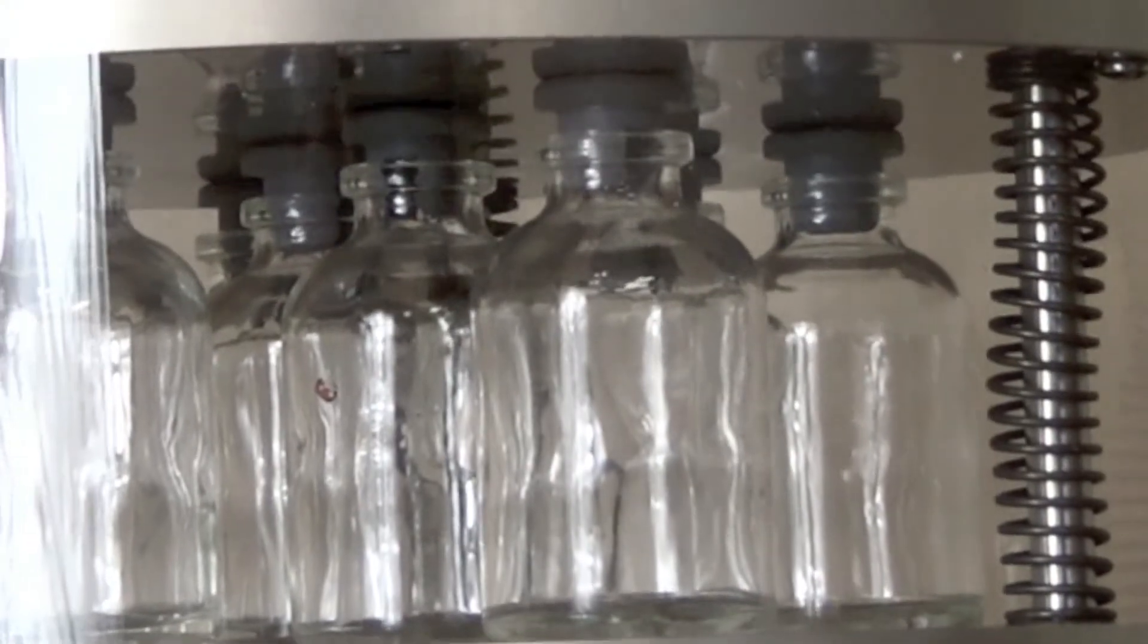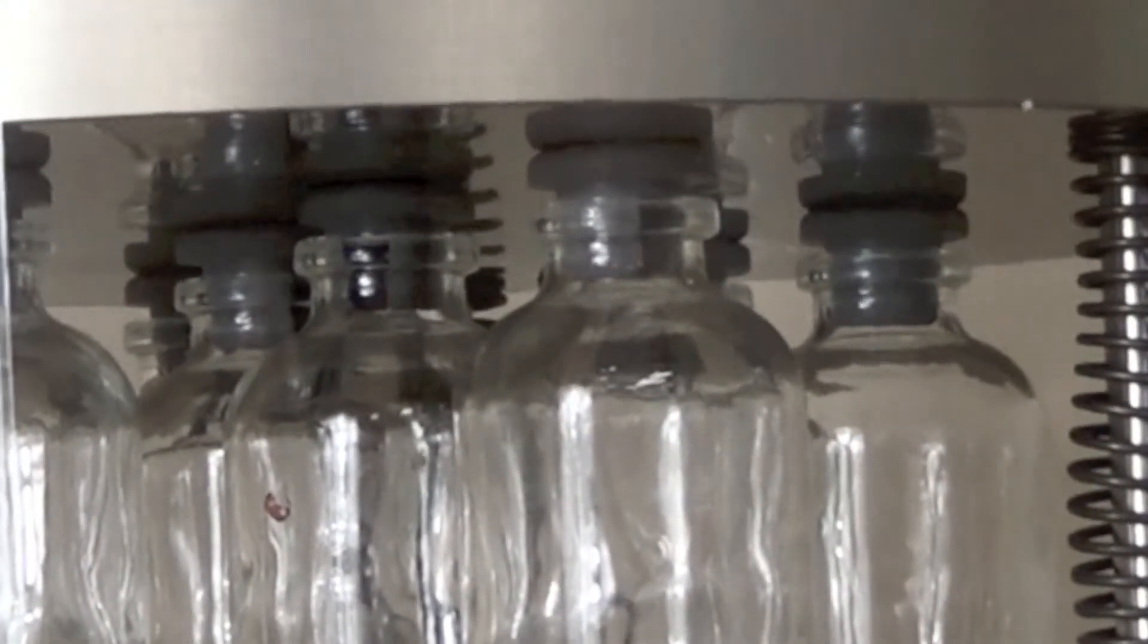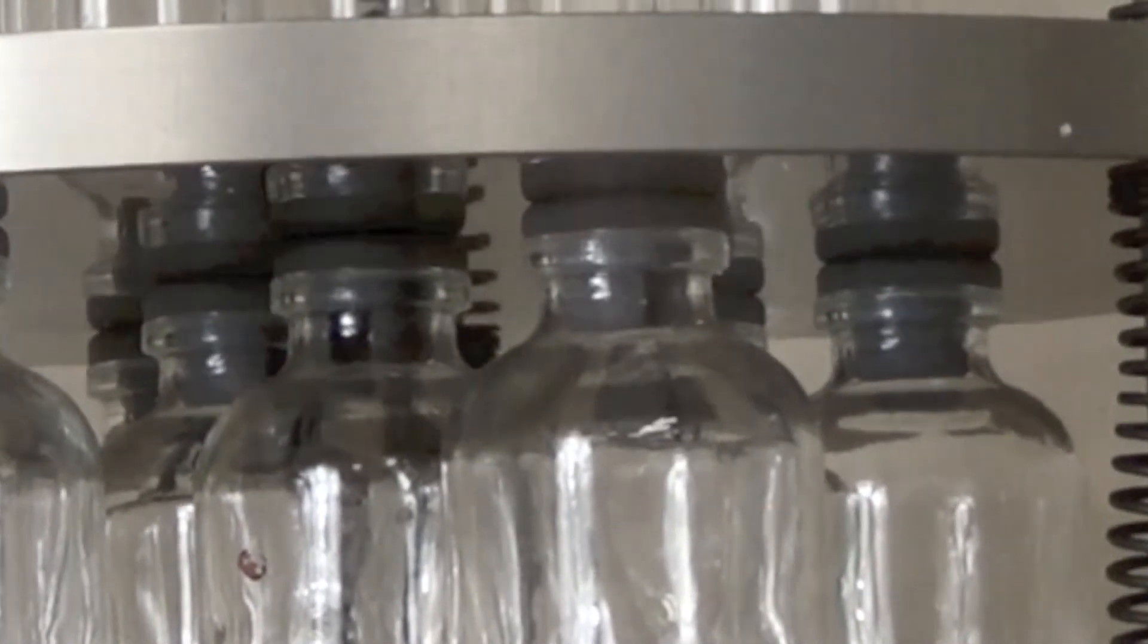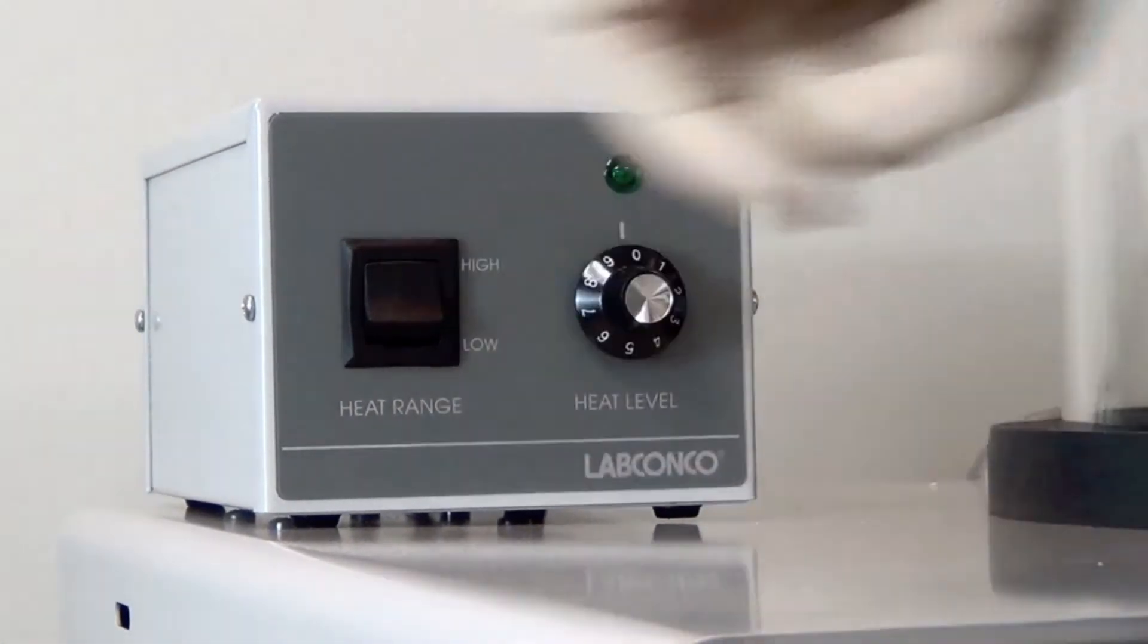When the freeze-dry process is complete, the clear stoppering chamber allows you to stopper the samples under vacuum for long-term storage. Before stoppering, turn off the shelf heater if one was used.